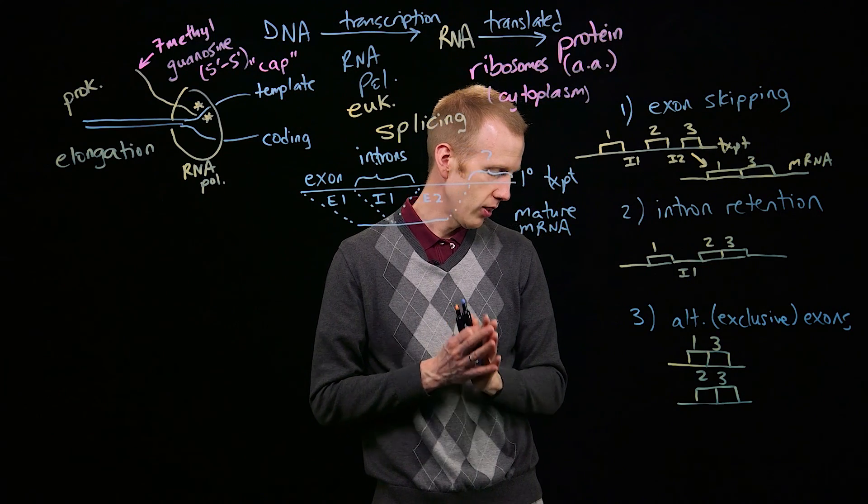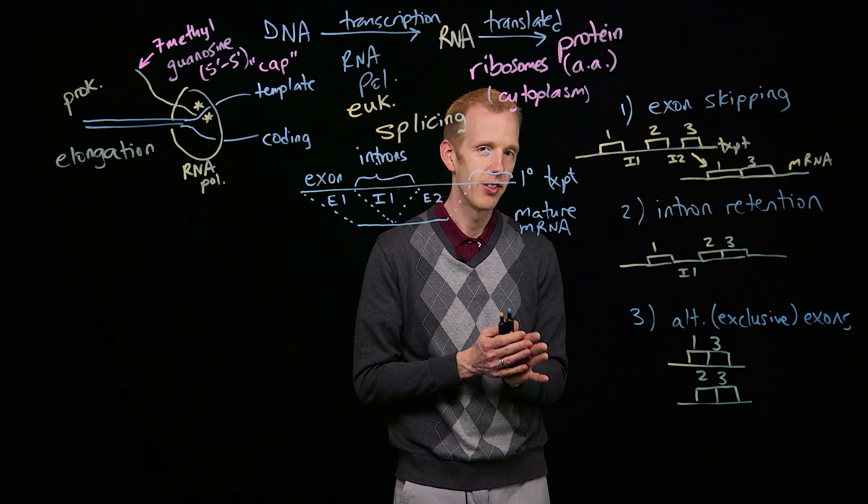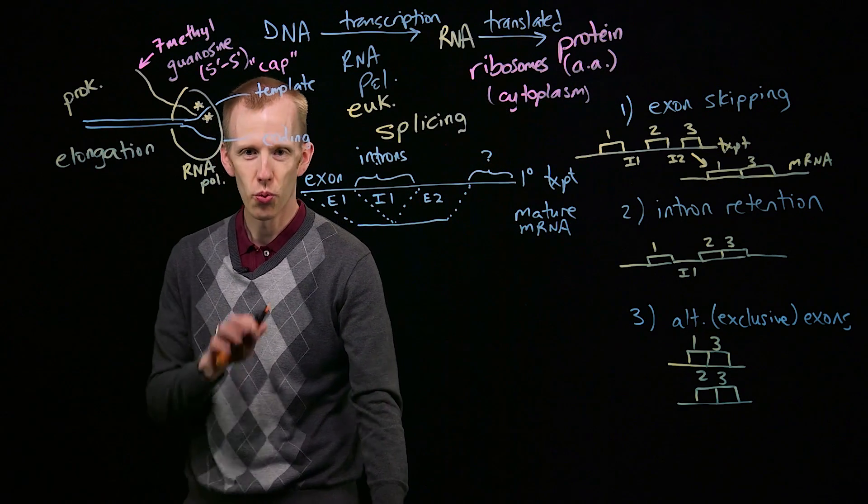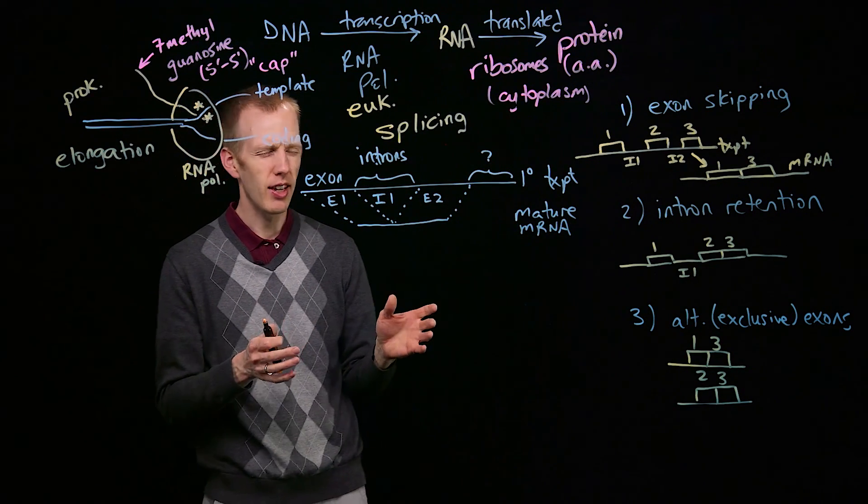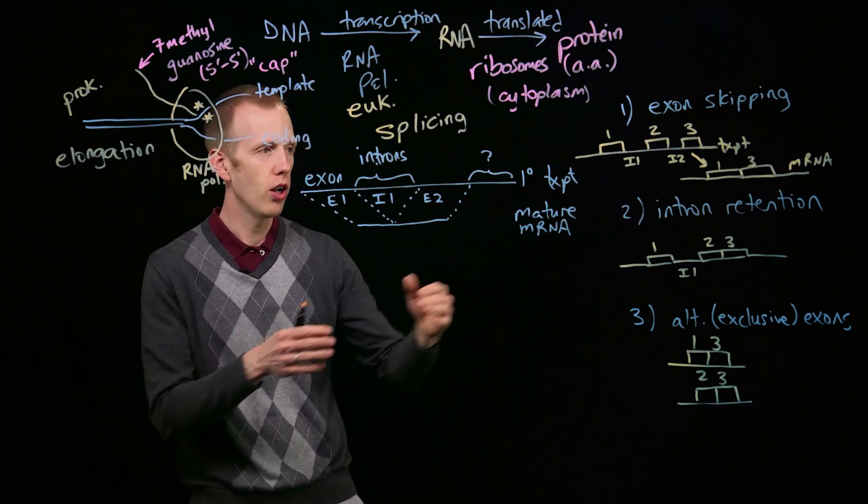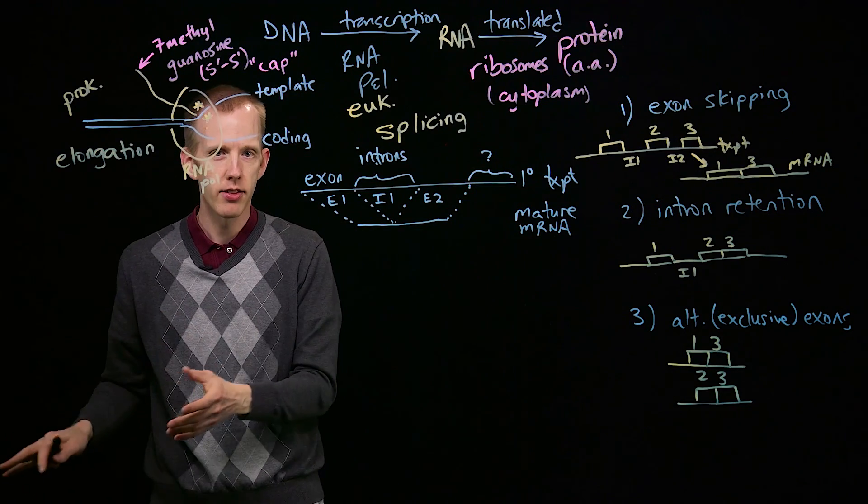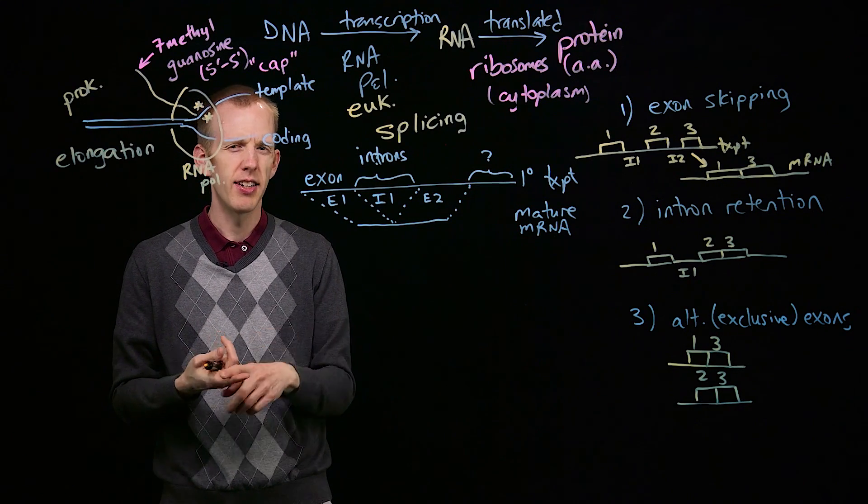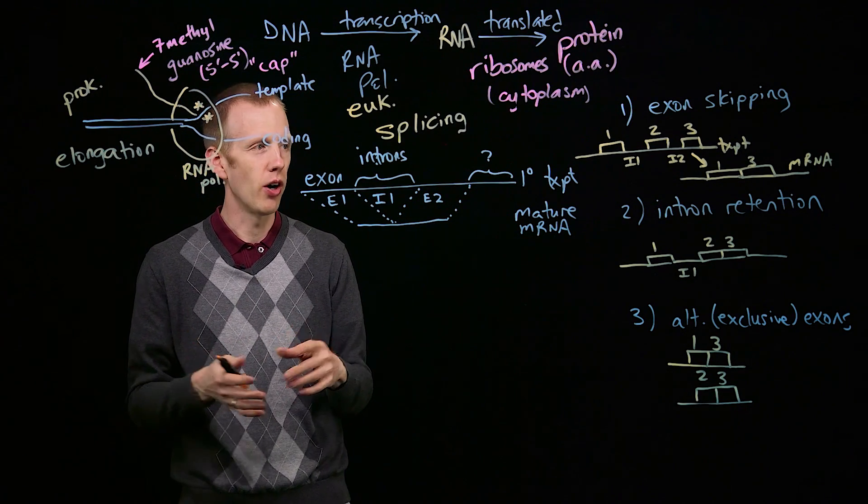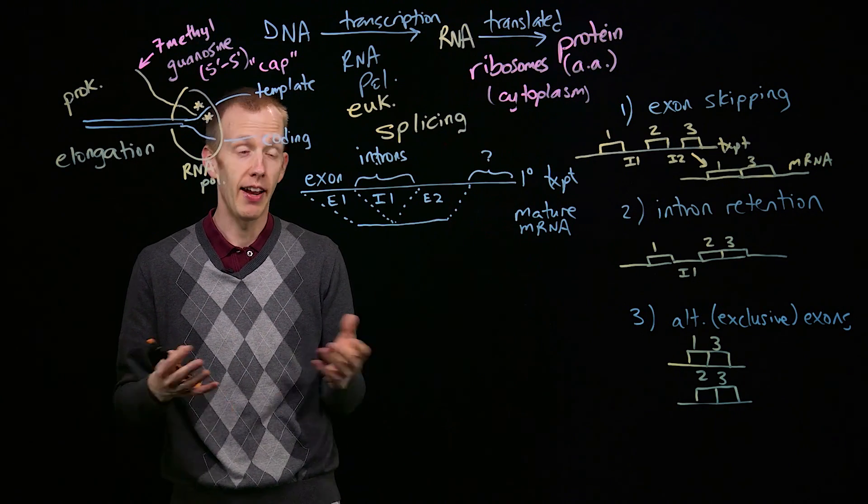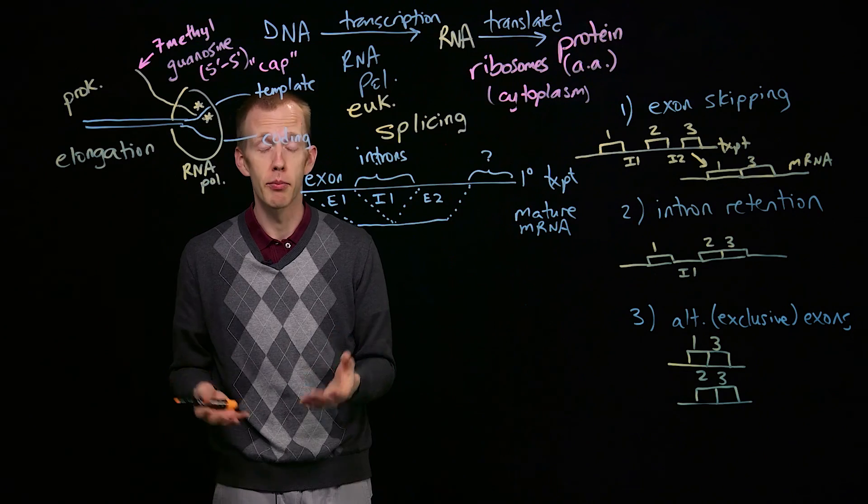Now there's one last important point, and that is for me to explain to you how the cell knows where to splice. You might think it's kind of crazy for a cell to produce all of this RNA when it's going to wind up cutting up and removing some parts of the RNA. Isn't that cutting up of the RNA molecule and stitching the exons together potentially mutagenic? Can't that process screw up? Yes, absolutely it can.